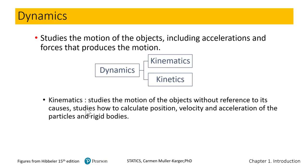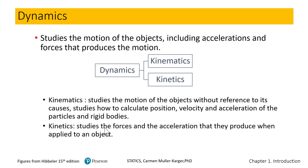Kinematics studies the motion of an object without reference to its cause, so it only studies the calculation of position, velocity, and acceleration of particles and rigid bodies. Kinetics studies the force and the acceleration — it studies the cause of the acceleration. So in kinematics we study only position, velocity, and acceleration, and in kinetics we study the full Newton's second law.